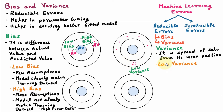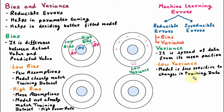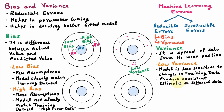In low variance, the model is less sensitive to changes in training data. It means if we change the training data, the output of the model will not change so much. In a low variance model, the model produces consistent estimates on different data. Even if we change the data, the model produces consistent estimates because the variance is very low and the data points are nearby.